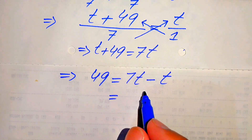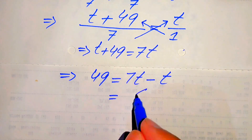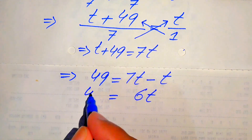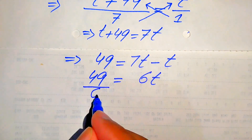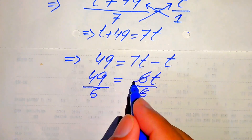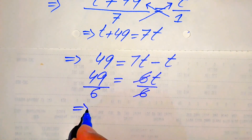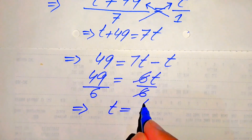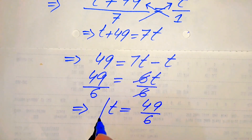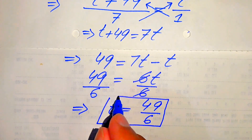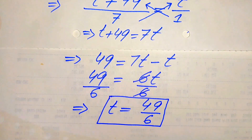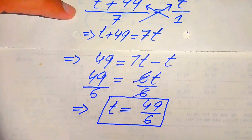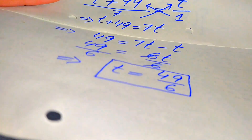We subtract the coefficients of these two like terms: 7 minus 1 equals 6, so 6t equals 49. Dividing both sides by 6, this 6 is cancelled out by this 6, and finally we get t equals 49 over 6. From both methods we get the same value of t, which is 49 over 6.